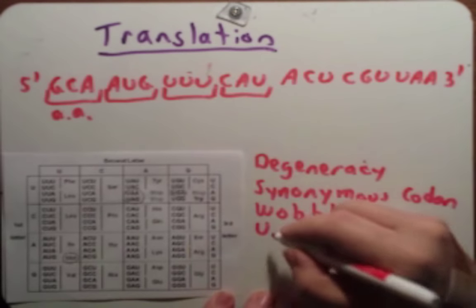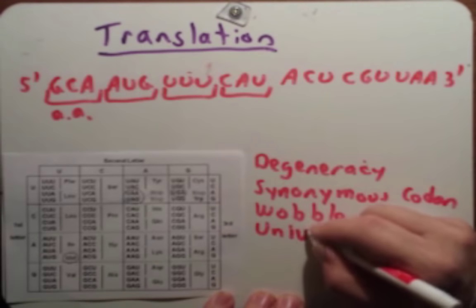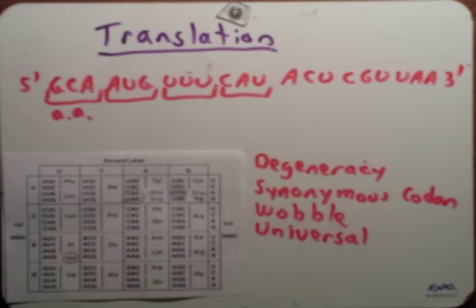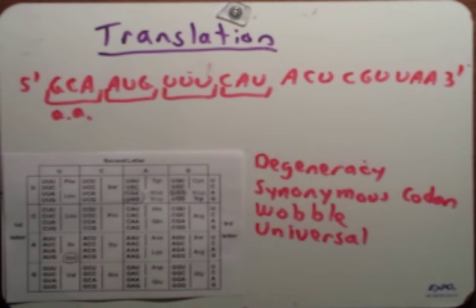Another term associated with the code is that it is universal, meaning all organisms use the same code. I always find this utterly amazing — whether you're looking at bacteria, an elephant, or a human, we're all reading our DNA using this same genetic code. Once this genetic code evolved, it was maintained within our systems as evolution proceeded. Now, every time you use the word universal, you know there are going to be some exceptions.